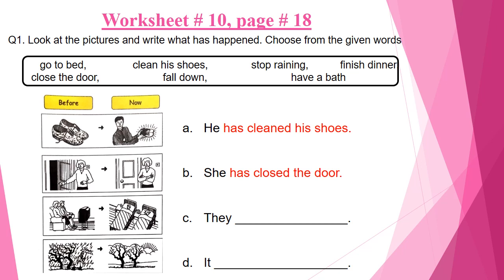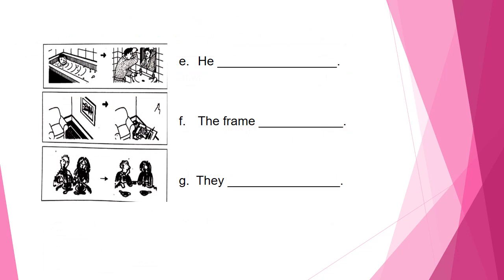Now let us look at worksheet number 10, page 18 of your book. Look at the pictures and write what has happened. Choose from the given words: go to bed, clean his shoes, stop raining, finish dinner, close the door, fall down, have a bath. In the first picture: he has cleaned his shoes. I have also done the second one for you: she has closed the door.